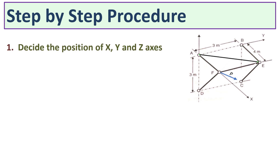The first step is to decide the position of the X, Y, and Z axes, because in a space frame we have to calculate the coordinates and the components of the forces along the X, Y, and Z axes so that we can apply the equilibrium conditions.